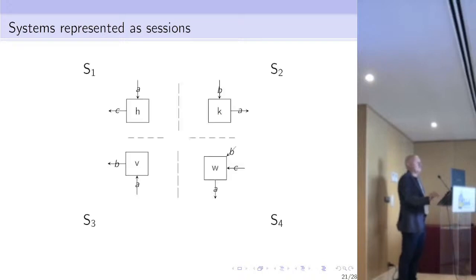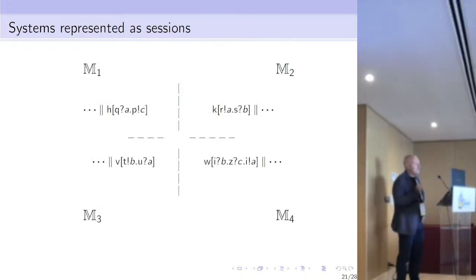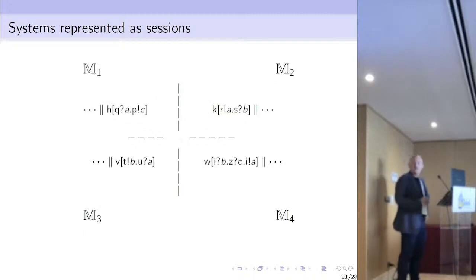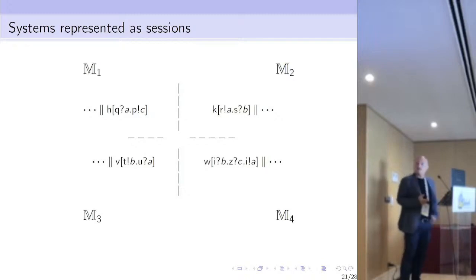Of course, if we have several systems we wish to connect, we represent them as sessions. The participants are described in the formalism. For instance, H can receive A and then send C — so the description of the behavior of H is: H can receive from Q a message A and then send to P a message C, where P is some other component of the system M1.